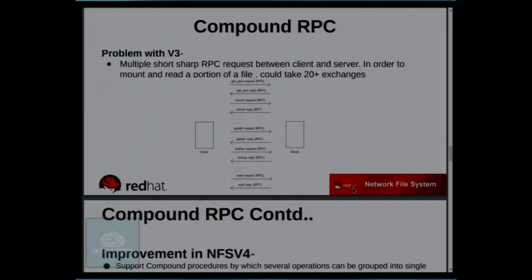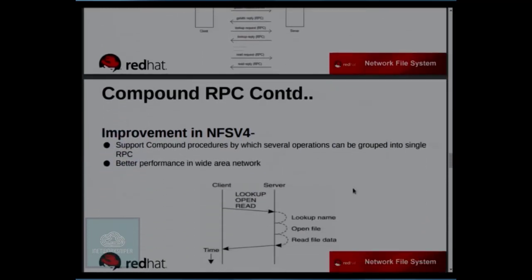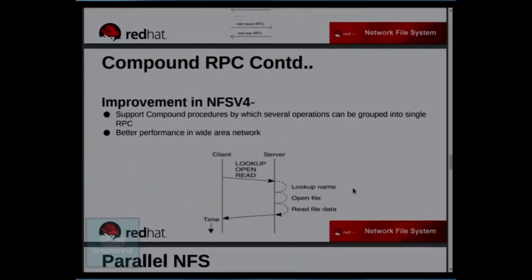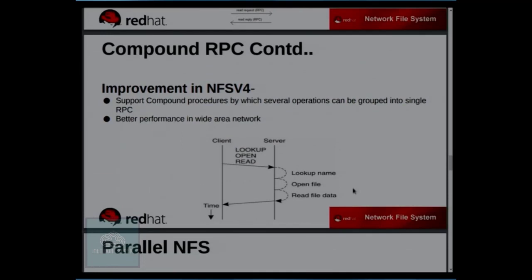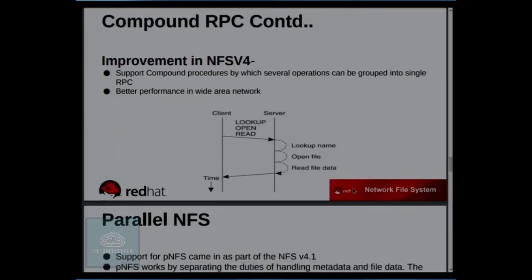Compound RPC: in NFS V3, each operation requires a separate small request from client to server. In NFS V4, we can couple many requests into one call — for example, lookup, open file, and read data can all be sent in one single RPC call, which improves performance.